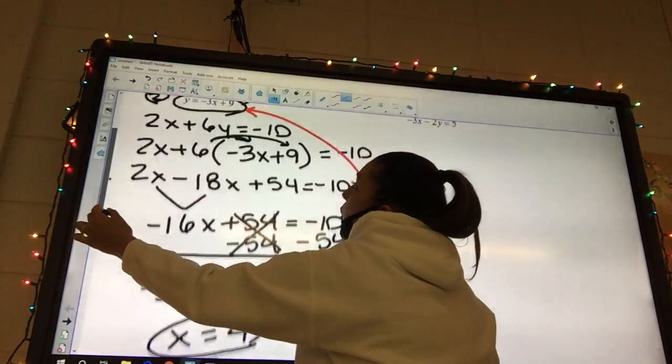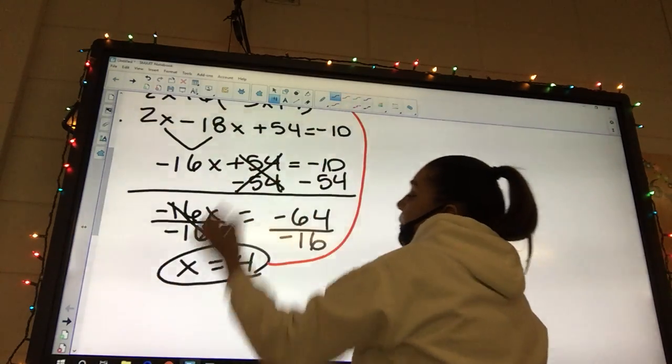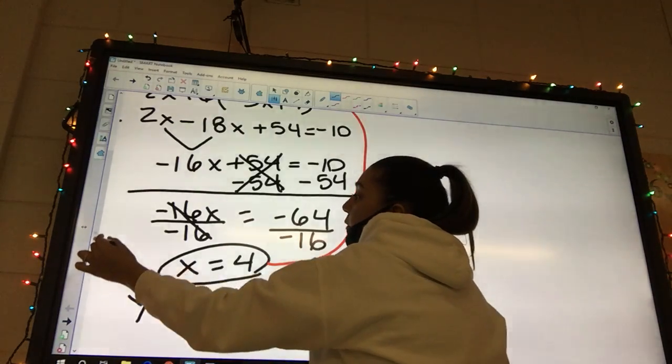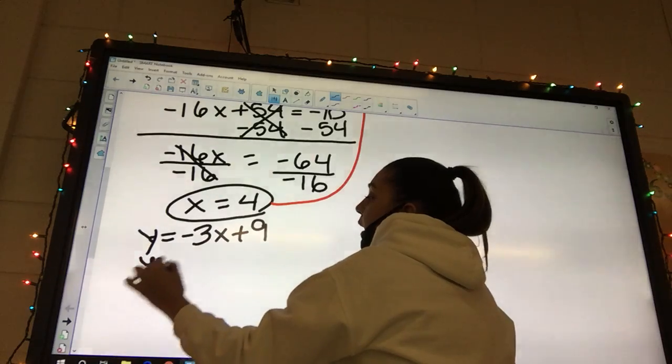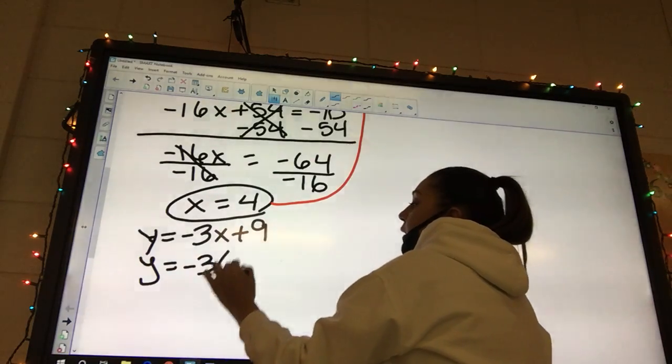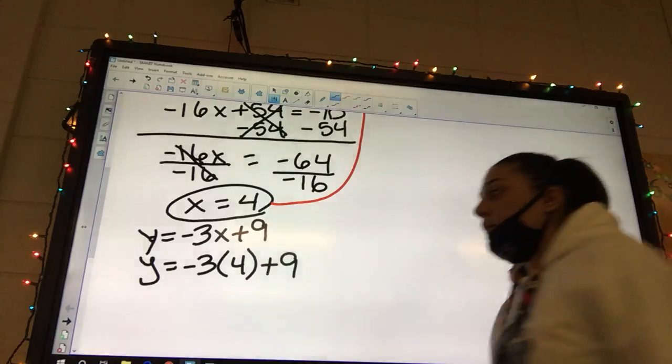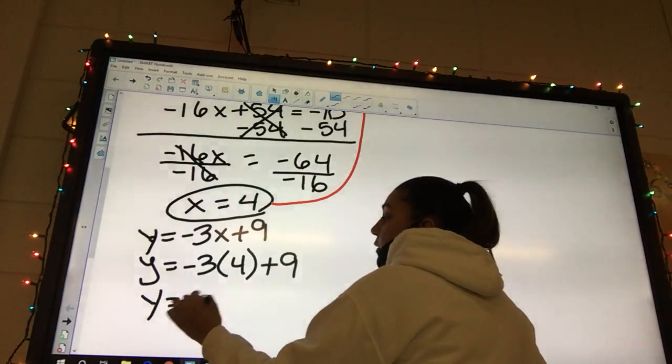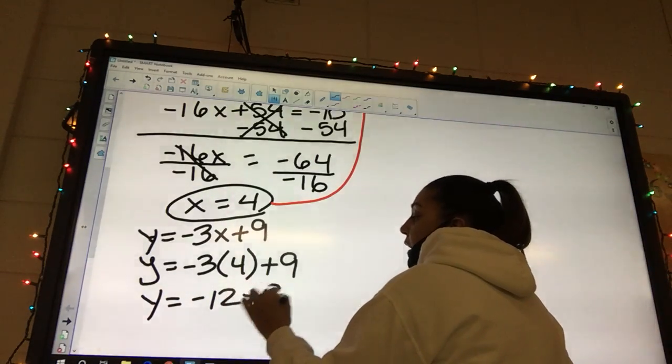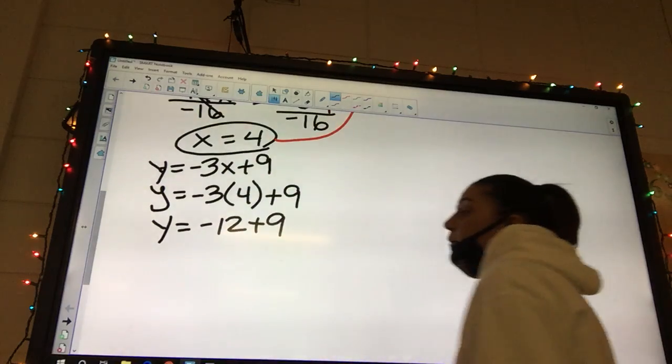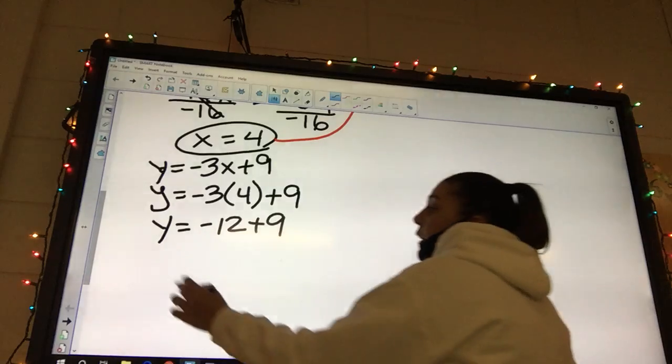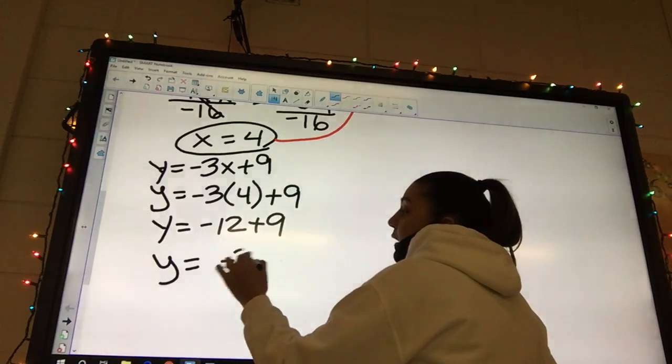And so I really have y equals negative 3x plus 9. And what am I plugging in for x? 4. So I got y equals negative 3 times 4 plus 9. Okay? So I'm going to have y equals negative 12 plus 9.